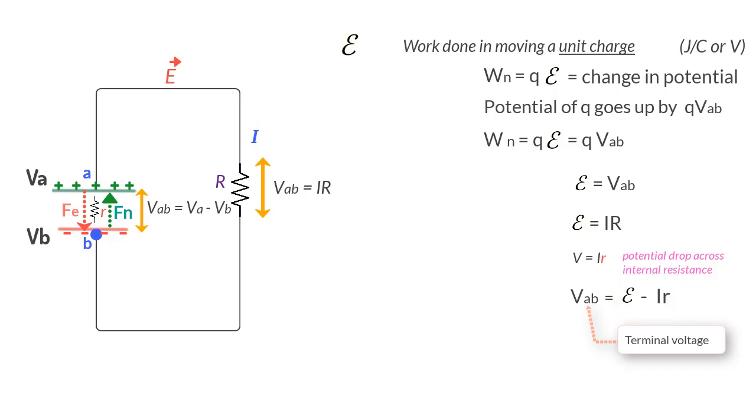So if you are given a battery that reads an EMF of 1.5 volts, you can say that the terminal voltage VAB will also be 1.5 volts as long as there is no current flowing through it. That is, I is equal to zero.